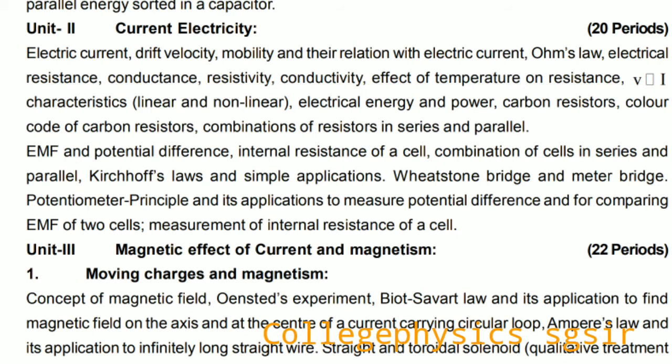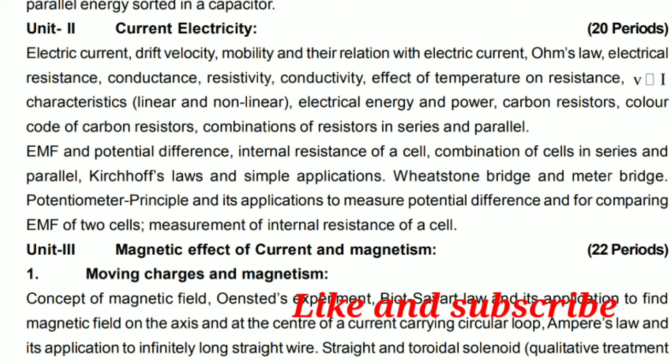In Unit 2, Current Electricity, we discuss electric current, drift velocity, mobility, and their relation with electric current — this is very important and conceptual. We then discuss Ohm's law, electrical resistance, conductance, resistivity, conductivity, effect of temperature on resistivity, P versus I characteristics for linear and non-linear curves, electrical energy and power, carbon resistance color code, and combination of resistors in series and parallel.